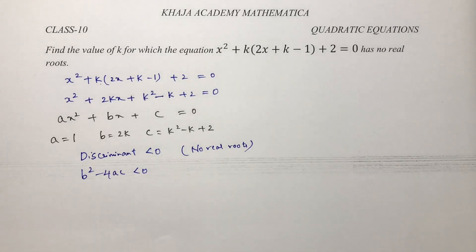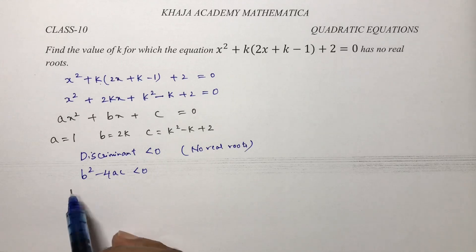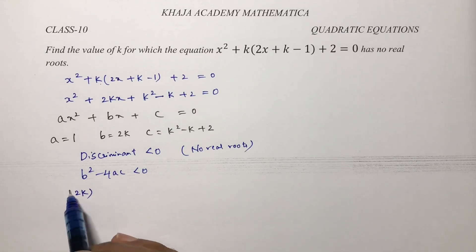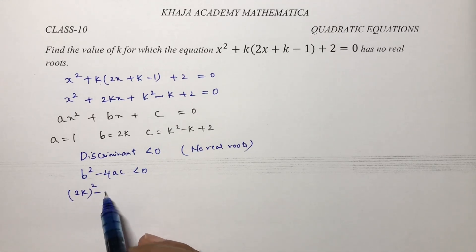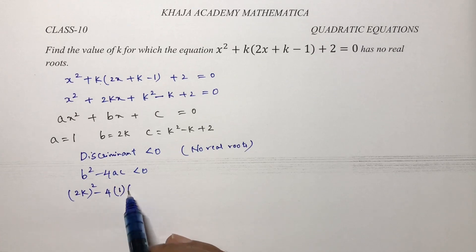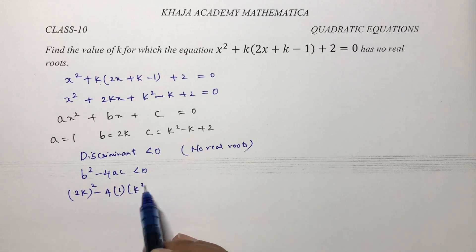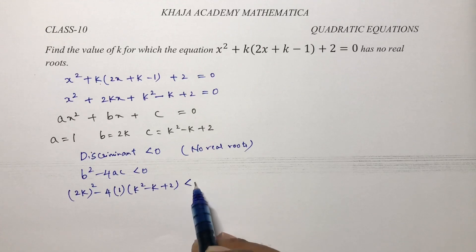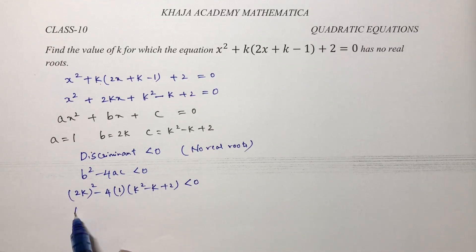Here the value of b is 2k, so (2k) squared minus 4 times 1 times (k squared minus k plus 2) is less than 0. This gives 4k squared minus 4k squared plus 4k minus 8 less than 0.